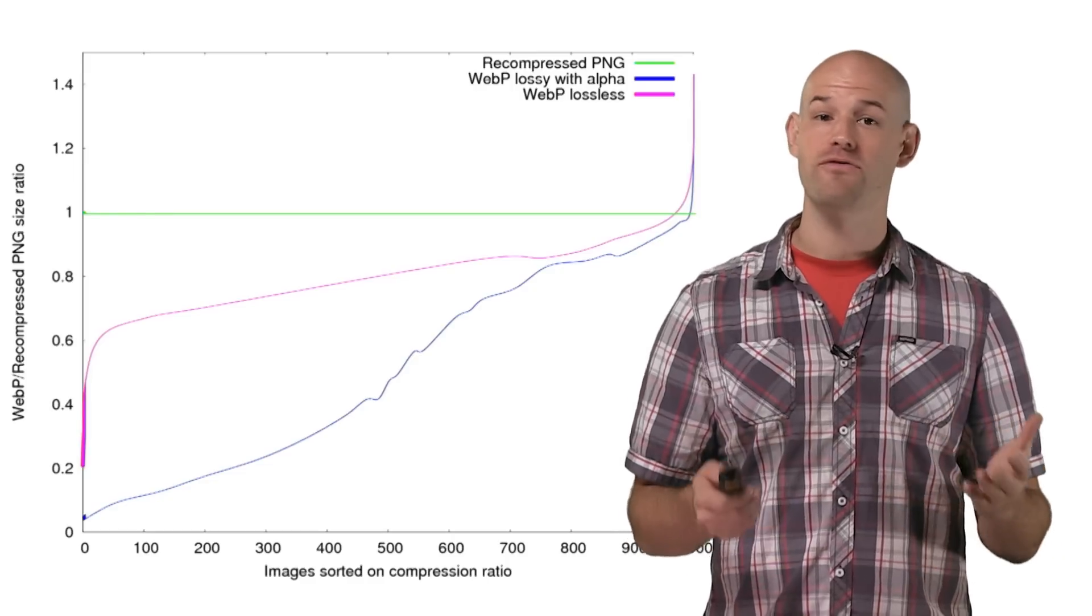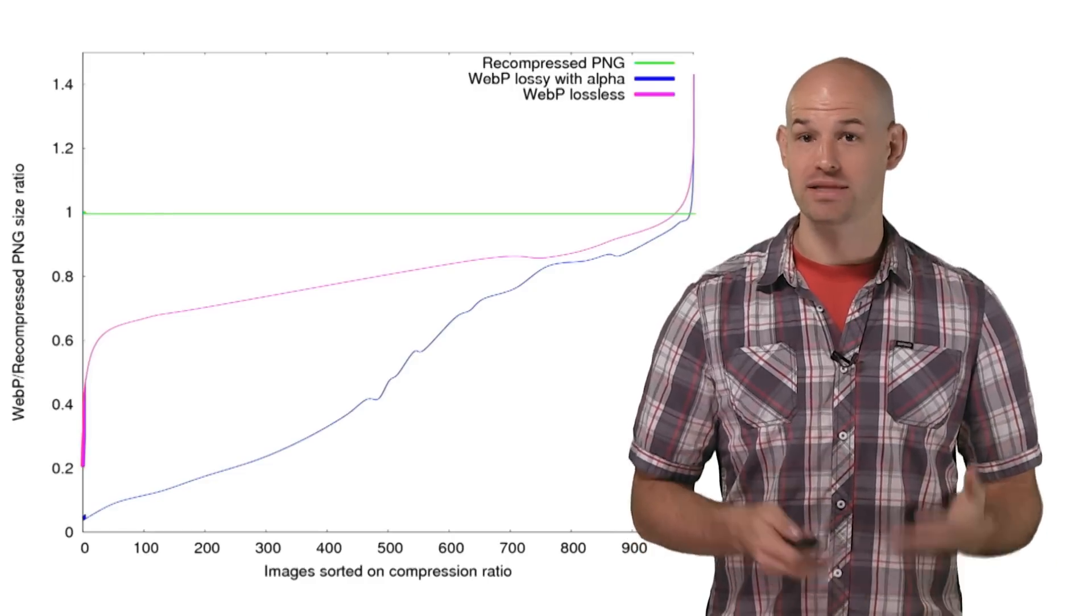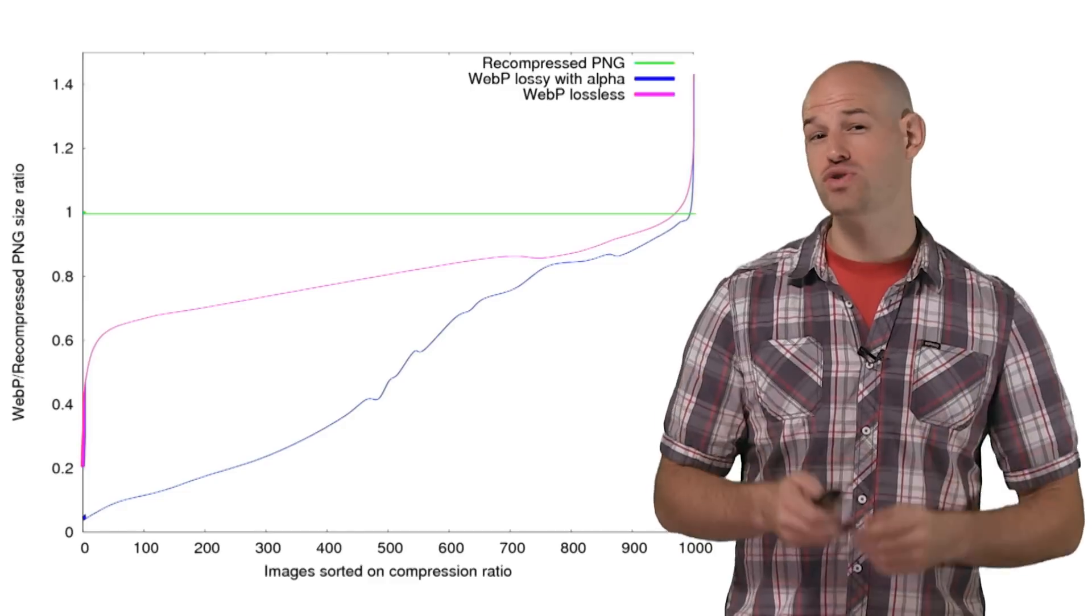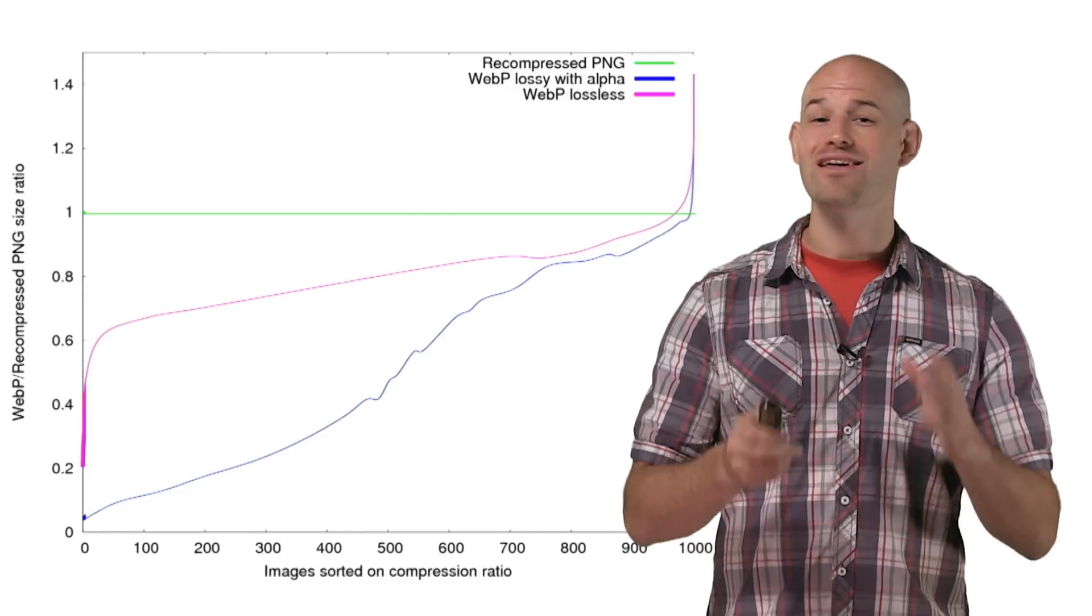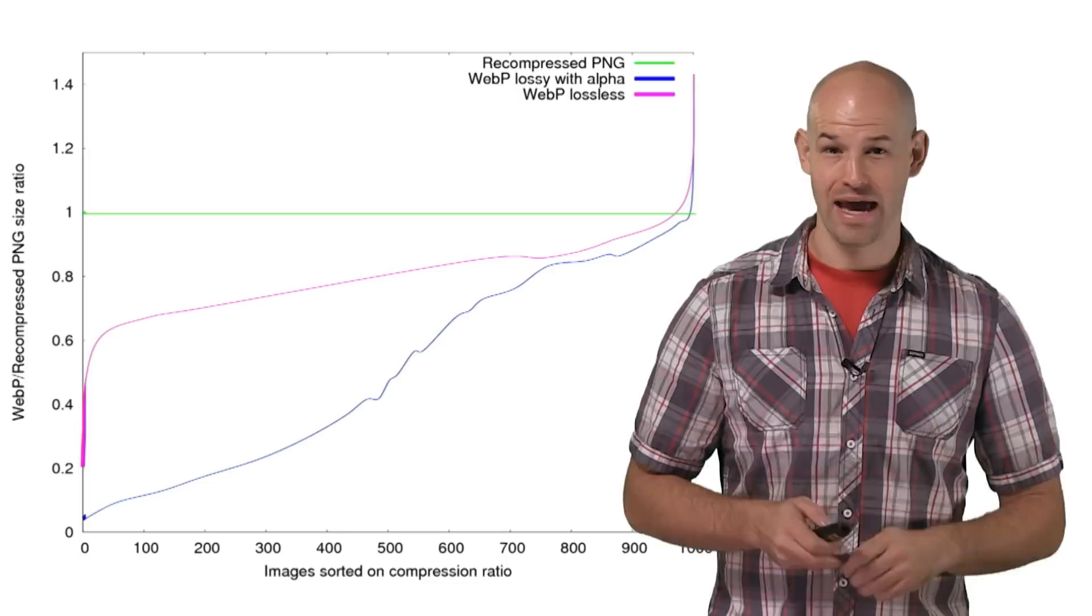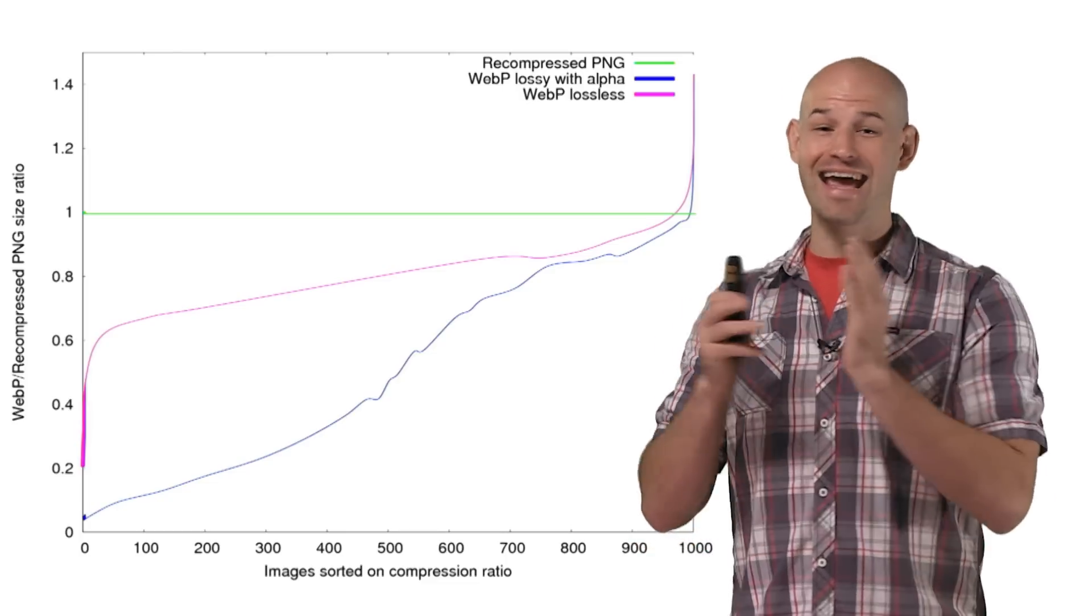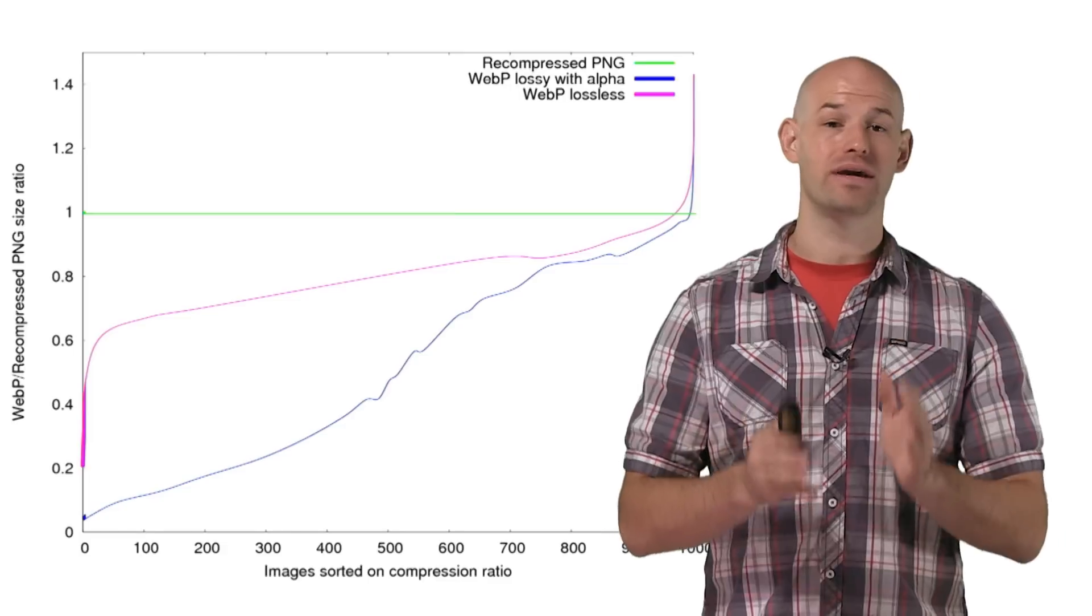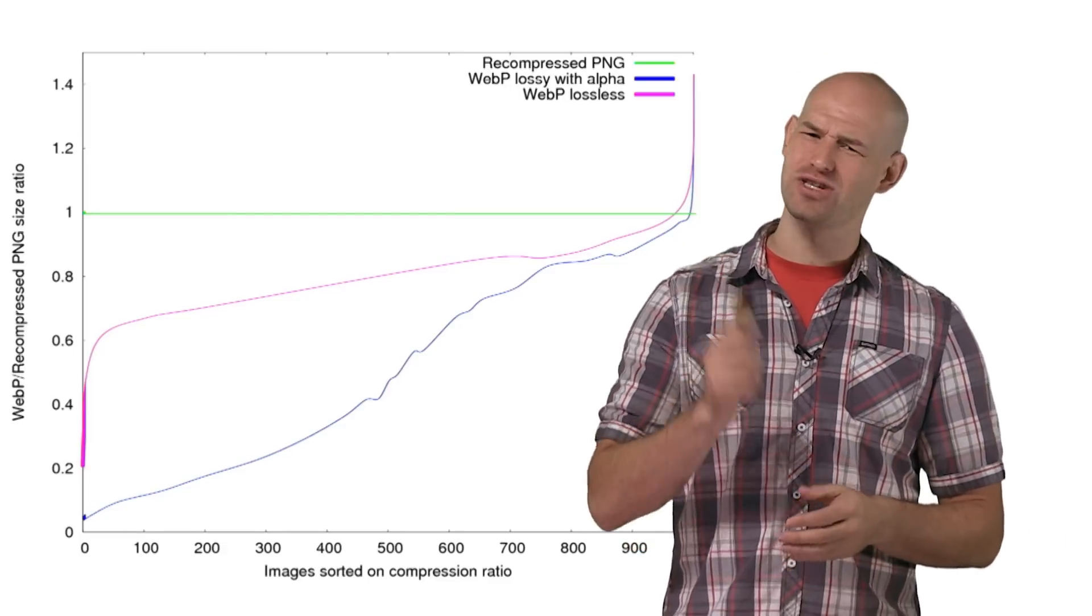the WebP team ran some tests to see how the format stacked up against PNG, testing 1,000 images in a test corpus. This graph shows the normalized results. You can see that the optimized PNG files are listed as the 1.0 green line there. And it's direct to see that both for lossy and lossless modes, WebP files are consistently smaller in size.